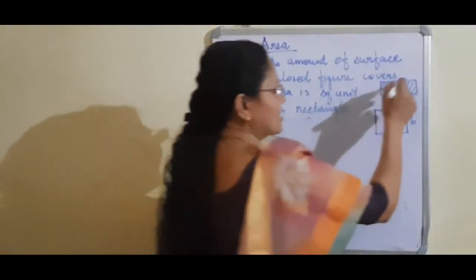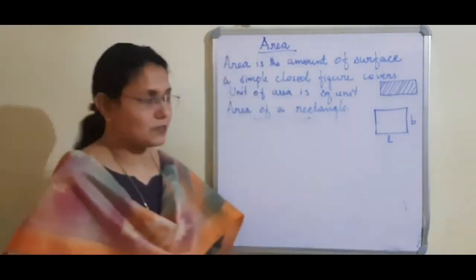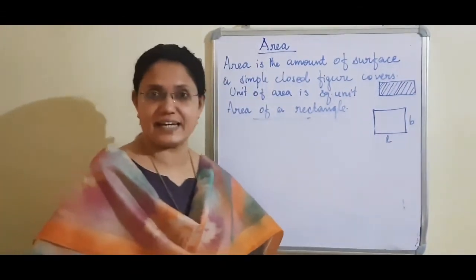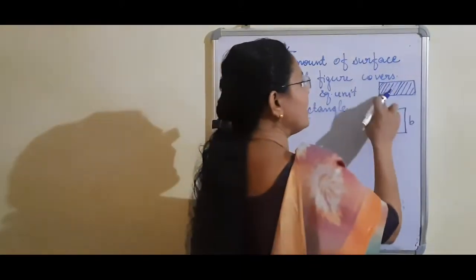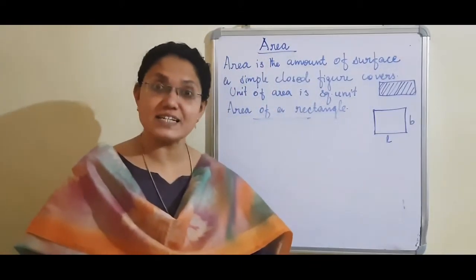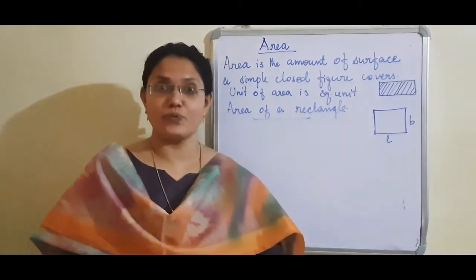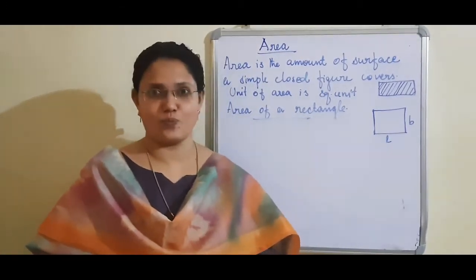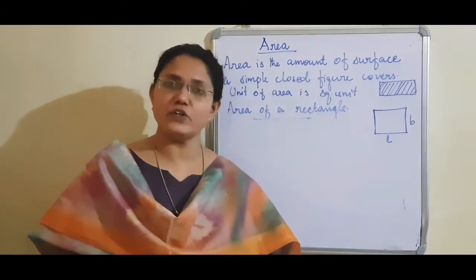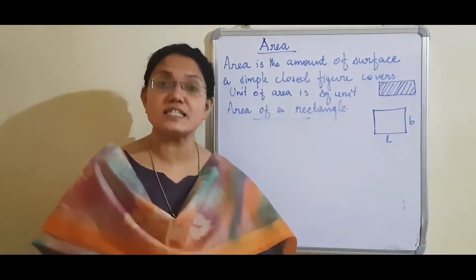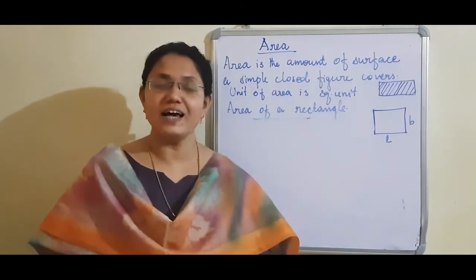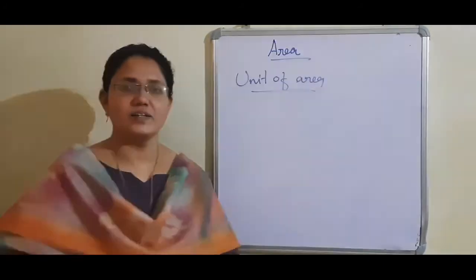For example, here there is a rectangle. The space inside the rectangle is shaded — that is the area of this rectangle. The space inside a classroom is the area of the classroom. To find the area of a field, the space inside that field — how much space is there — that is the area of the field.